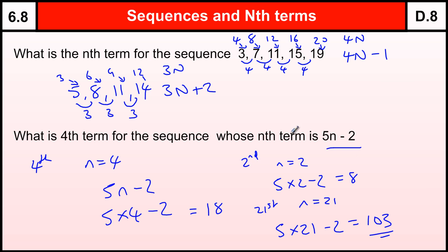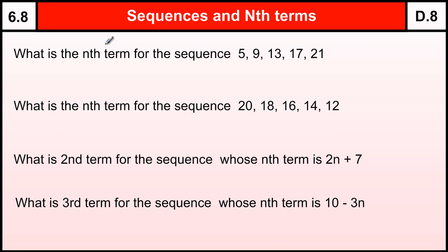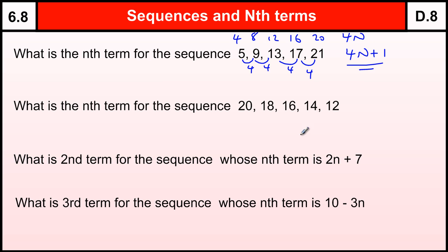This is why the Nth term is very powerful — because you can work out any term of the sequence without having to work out any of the other terms. Now, some practice questions. The Nth term of the sequence 5, 9, 13 — it's going up by 4 each time, so this is based on the 4 times table. Writing the 4 times table above it, I can see it's 4N, and I'm adding 1 each time to the 4 times table. So I've got 4N plus 1. That is my Nth term for this sequence.